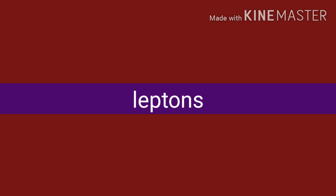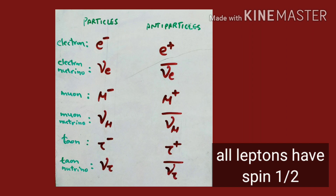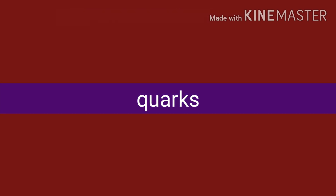Let's see the spin of leptons. All 12 leptons have spin-1/2. These 12 leptons consist of 6 particles and 6 antiparticles — all 12 have spin-1/2. Now let's talk about quarks: again, all quarks have spin-1/2.